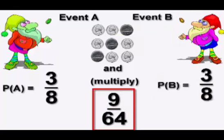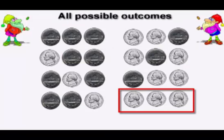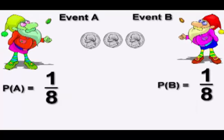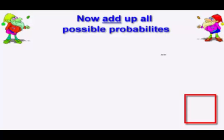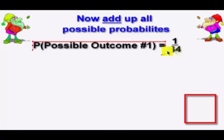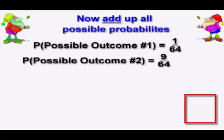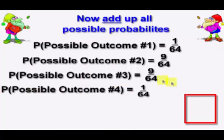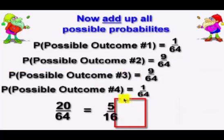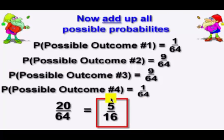Again, we get nine out of 64. The last final outcome is they could both get three heads. There's one way to get three heads out of eight possibilities, and again we multiply, giving one out of 64. Then you add up all the individual possible probabilities: one out of 64 for no heads, nine out of 64 for one head, nine out of 64 for two heads, and one out of 64 for three heads. After reducing, the final answer is five out of 16.